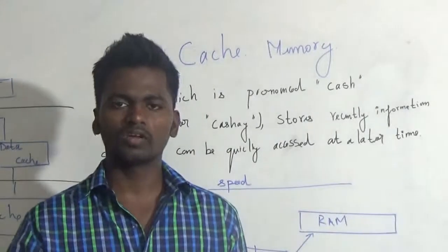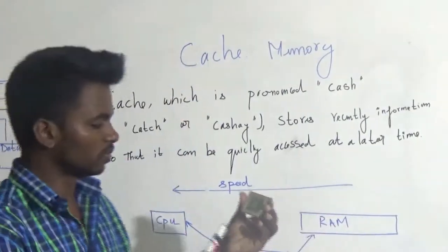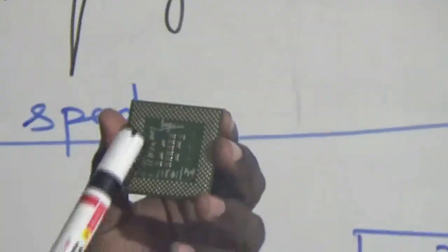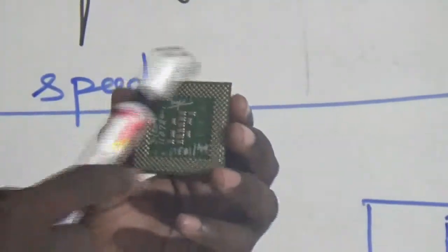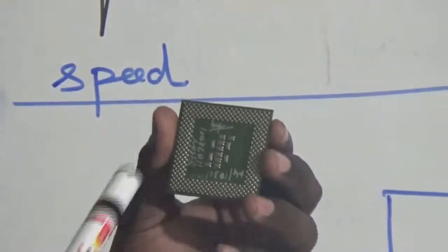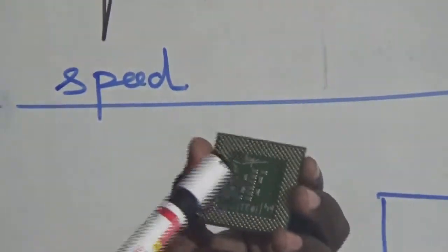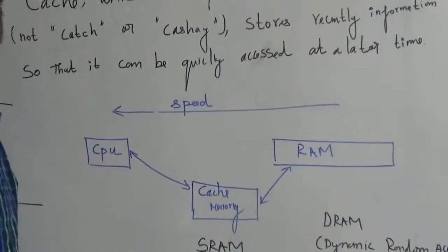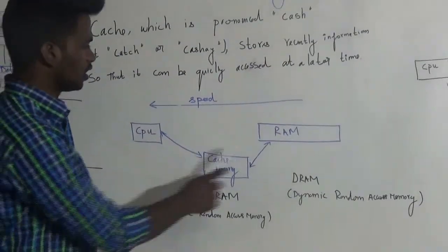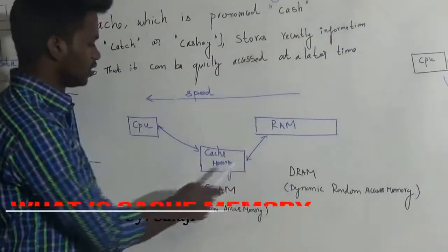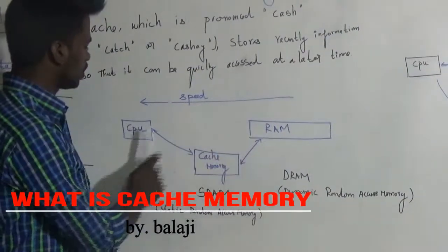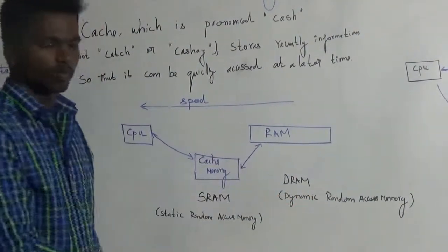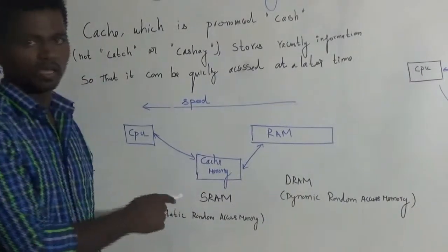Every computer has a processor. This is a pin-type processor. This is the default processor. This is the cache memory. This is a small architecture diagram showing the CPU and RAM, and this is where the cache memory sits.